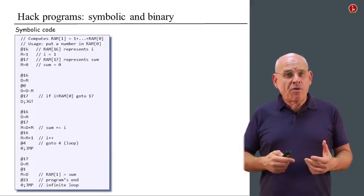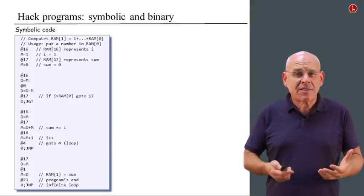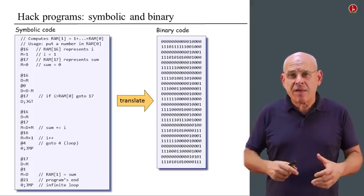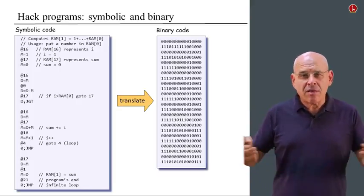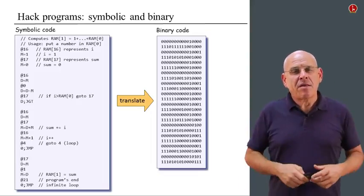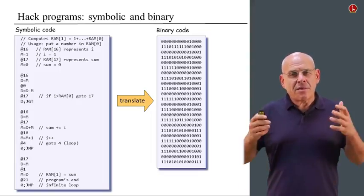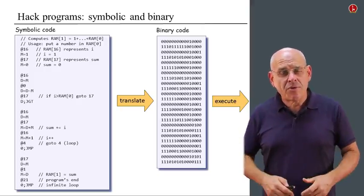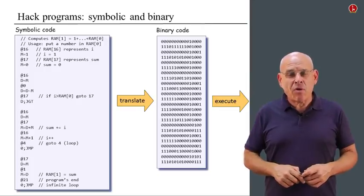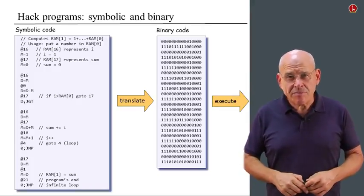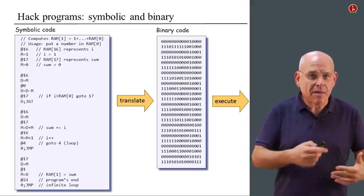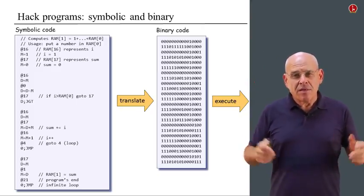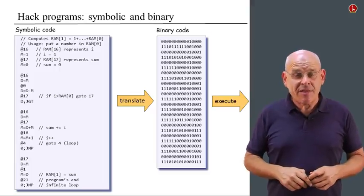If we want to run this program on the computer, we first must translate it into binary code. We have either a human assembler or a computer program that translates from one to the other. Once the program is expressed in binary code, we can load it into the computer and execute it. The program will hopefully do something useful. If not, we can go back, debug the program, reassemble it and rerun it until we are satisfied.